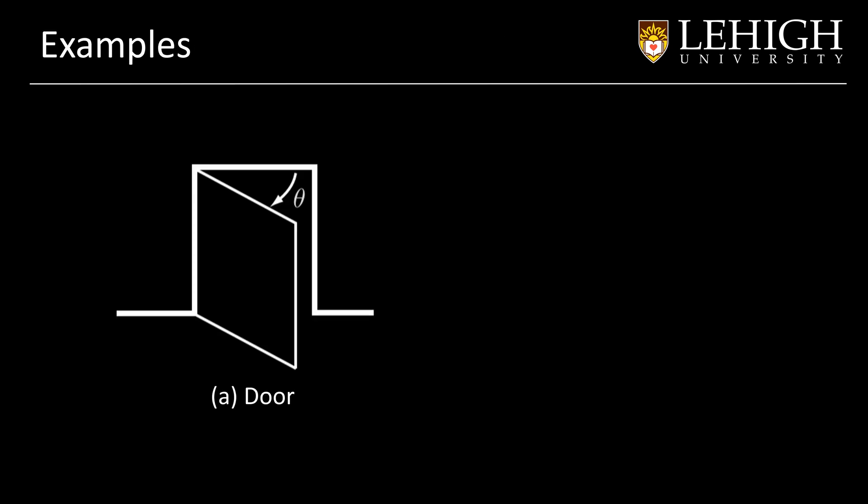The simplest example is a door. Even if it is open or closed or just a little bit open, we only need one variable to represent how open the door is. In this case, we represent that value by theta, which determines the angle that the door is open.